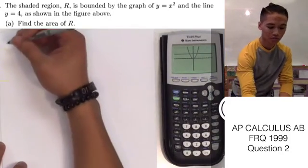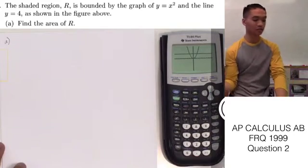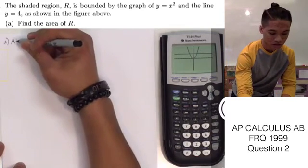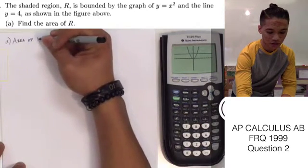Let's go ahead and move on to part A. So part A is asking us to find the area of R. We can go ahead and write what we're looking for: the area of R.